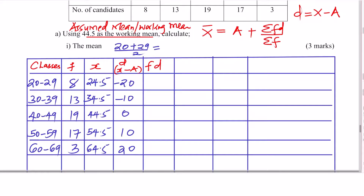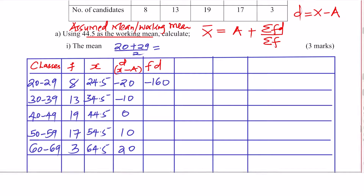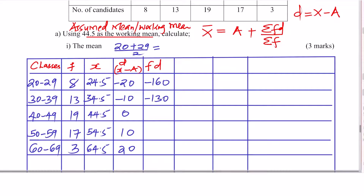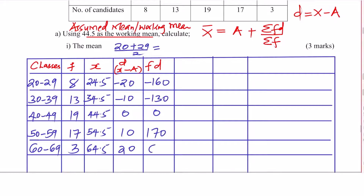Then get FD — take frequency multiplied by deviation. First class: F is 8, D is negative 20, so 8 times negative 20 gives negative 160. Then 13 times negative 10 gives negative 130. Then 19 times 0 gives 0. Then 17 times 10 gives 170. Then 3 times 20 gives 60.